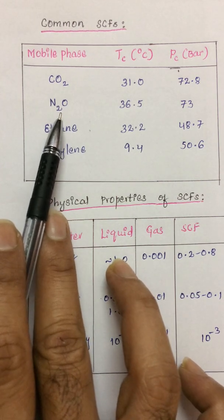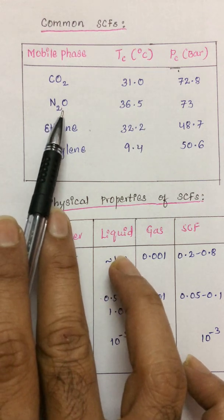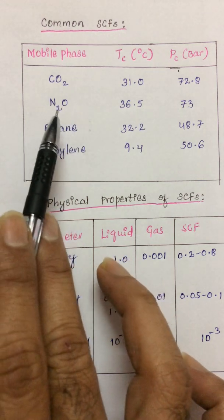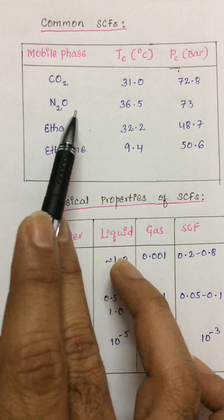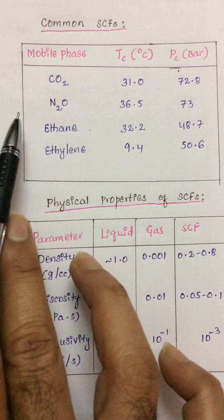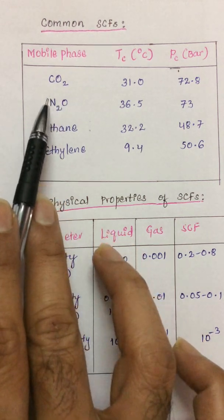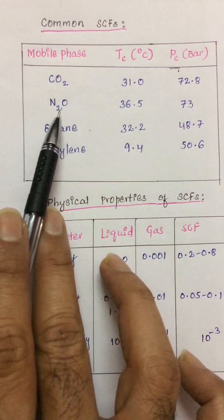But there is also an advantage with respect to this. Since it is having a permanent dipole moment, it is considered to be polar and it can also elute some polar compounds present in the given analyte. In relation to carbon dioxide, when I compare it with carbon dioxide, nitrous oxide is also found to be a little bit expensive.